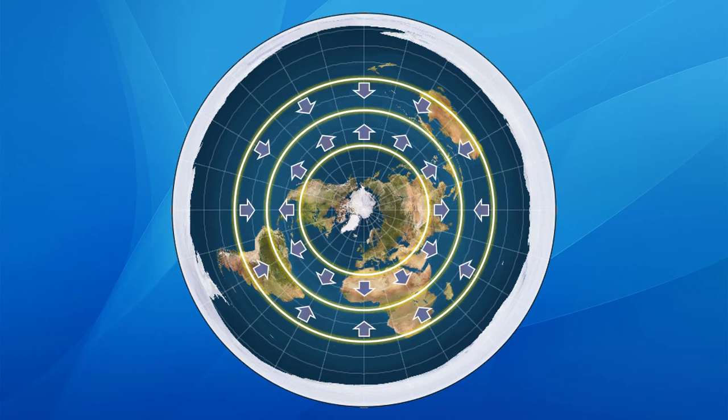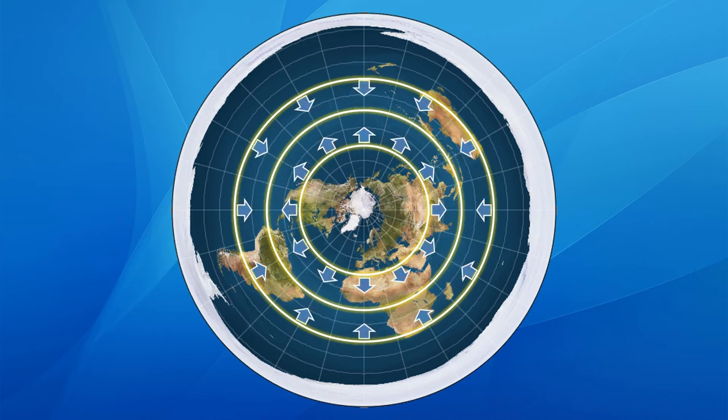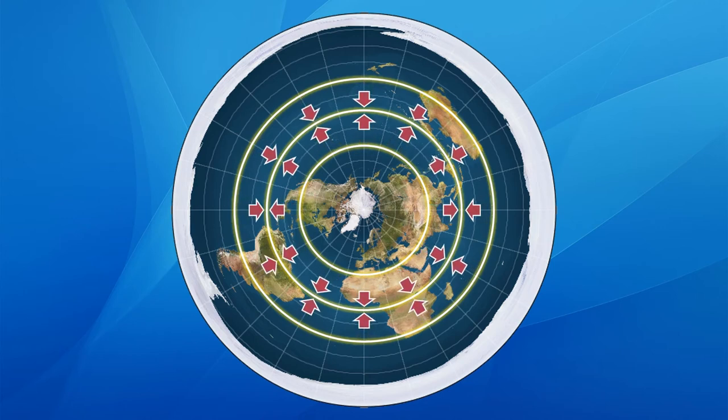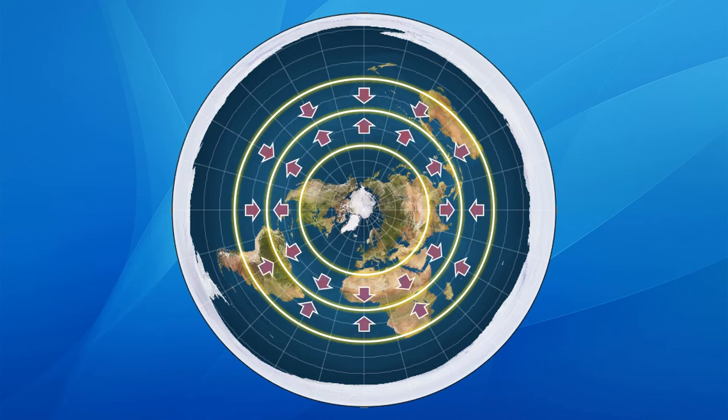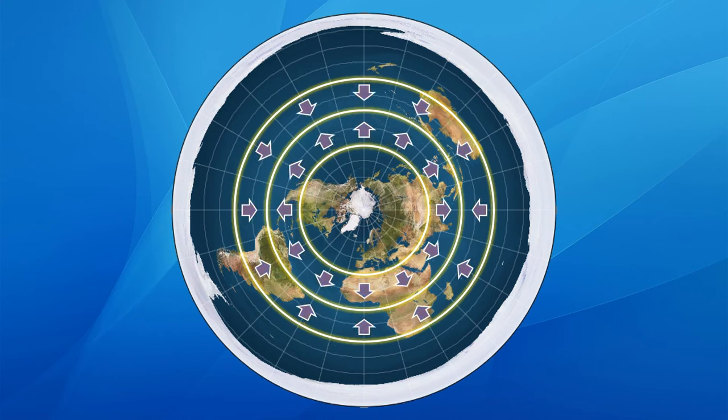Remember, the only reason prevailing winds curve is due to the Earth's spin. Without the rotation of the Earth, even on a globe, the prevailing winds would follow a straight path.